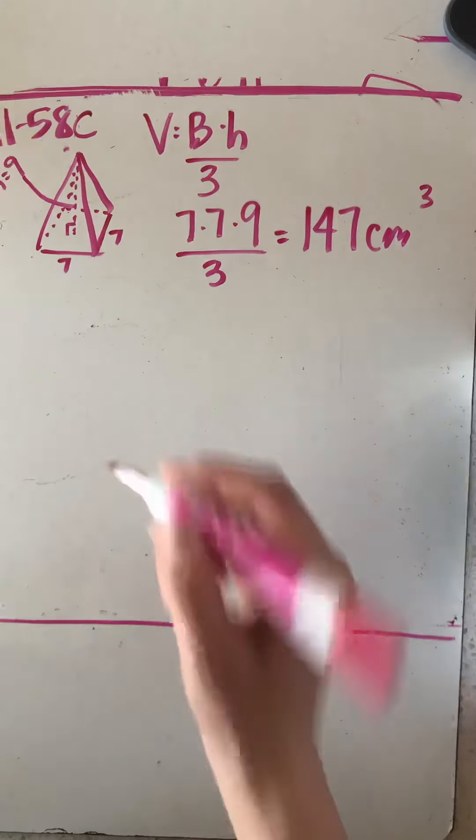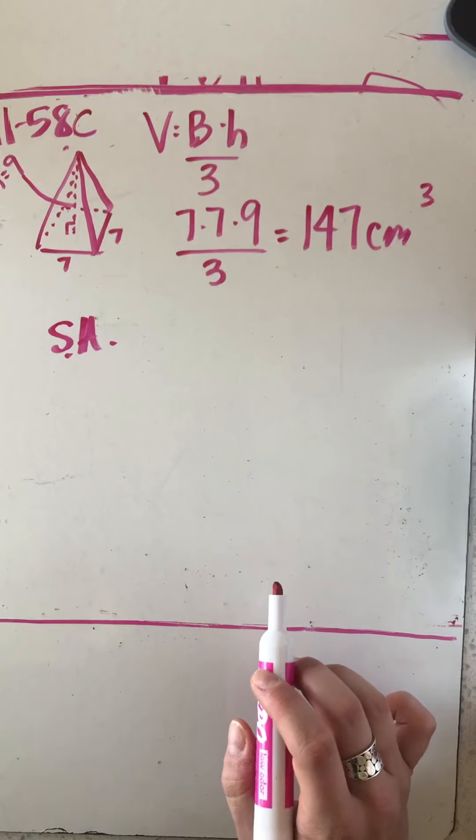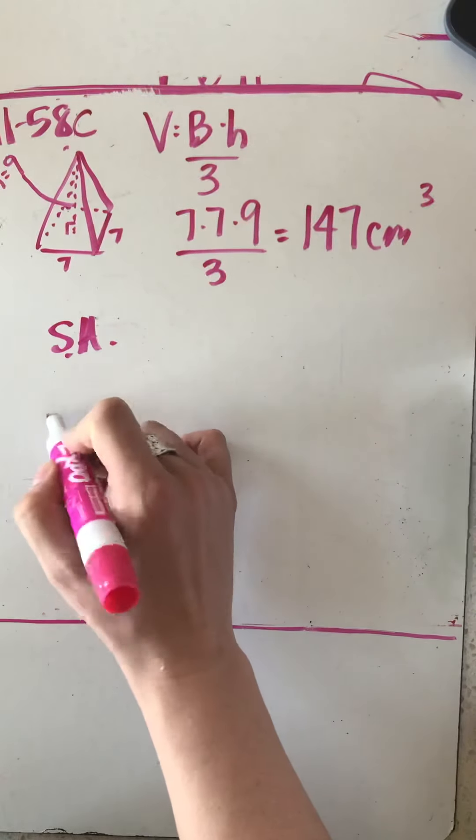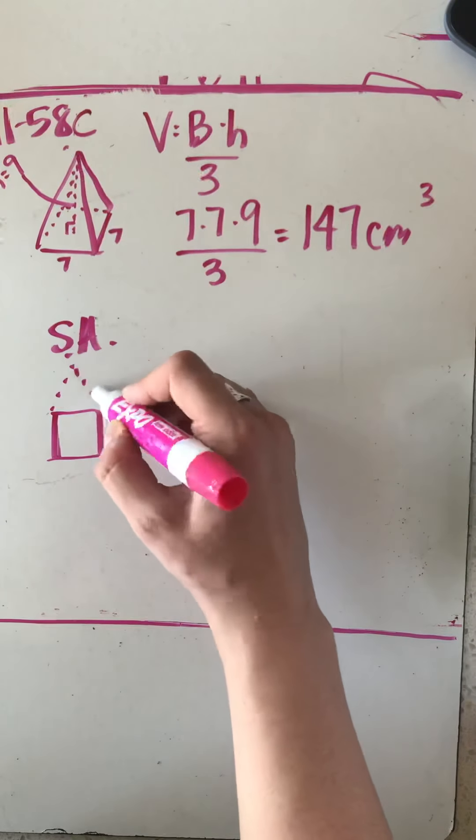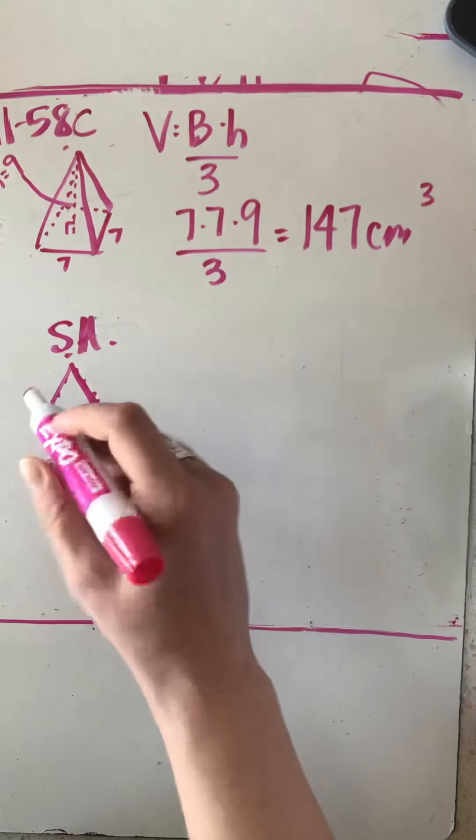So let's find the surface area. The surface area is adding all the faces together, all the areas of the faces together. So if you draw a net, sometimes that's easier for students to visualize and so we've got our square base and then we have our four triangular faces that are all congruent to each other.